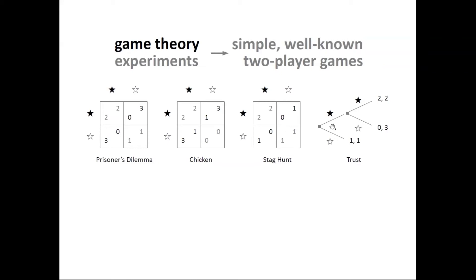In the game of Trust, again there are two players with two choices, but players make choices sequentially — first one player makes a decision, then the second player, if given a chance, makes a decision as well. The numbers are payoffs to the first and second player respectively.